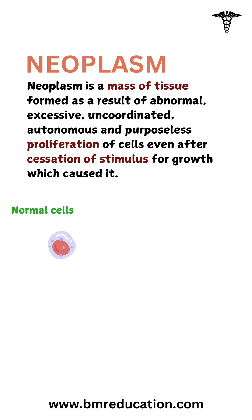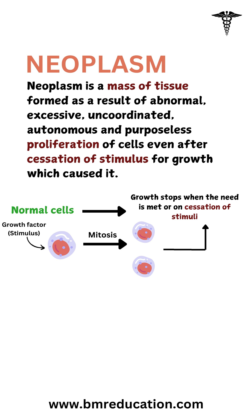Normally, growth stops when the need is met. The proliferation and maturation of cells in normal adults is controlled, as a result of which some cells proliferate throughout life — these are labile cells. Some have limited proliferation — these are stable cells — while others do not replicate at all — these are permanent cells.